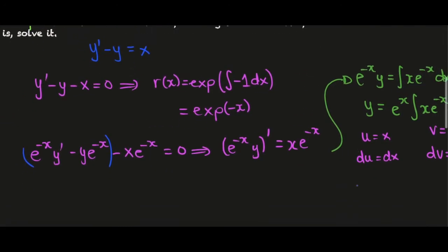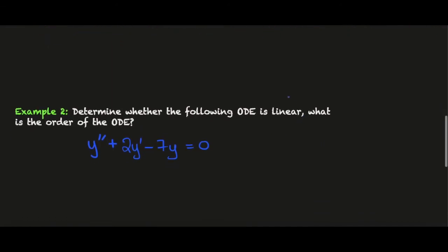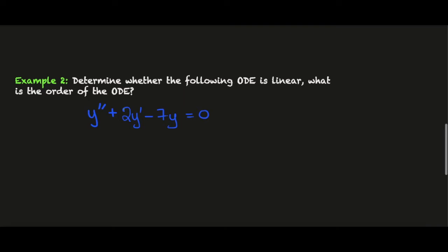Next example: determine whether the following ODE is linear and determine the order. The order is the number of derivatives occurring in the equation. The order here is 2. Let's note that the order is 2 and it is linear because again the highest power of y that occurs is 1.